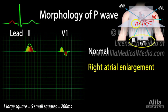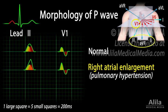Unusual morphology of P waves is indicative of atrial enlargement. In right atrial enlargement, depolarization of the right atrium lasts longer than normal and its waveform extends to the end of that of the left atrium. This results in a P wave that is taller than normal, more than 2.5 small squares. Its duration remains unchanged, less than 120 milliseconds. In V1, this is seen as a taller initial positive deflection of the P wave, more than 1.5 small squares. Right atrial enlargement is usually due to pulmonary hypertension.